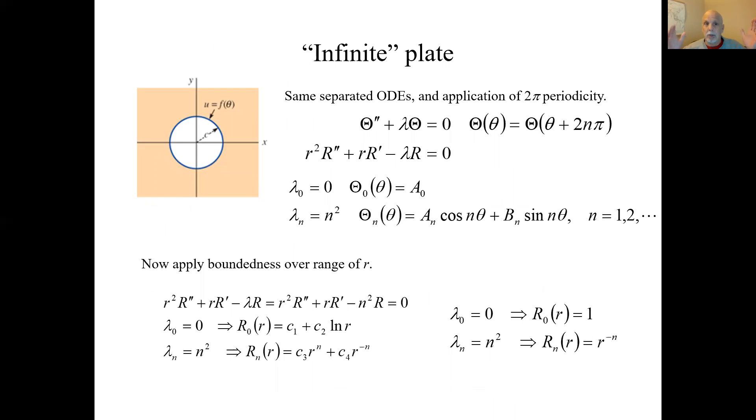Now, what if it's an infinite plate, which is this thing here? It's a hole in the middle, but then it goes out to infinity. Everything is the same in this case. Same equations to be solved, so you're going to get the same ordinary differential equation. It goes all the way around in theta, so the theta solution has to be 2π periodic. All that stays the same.